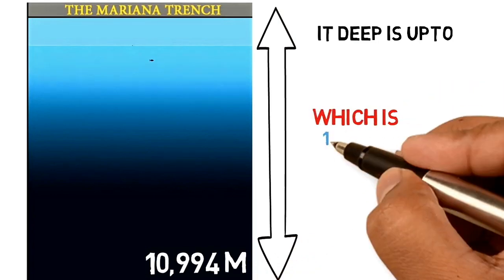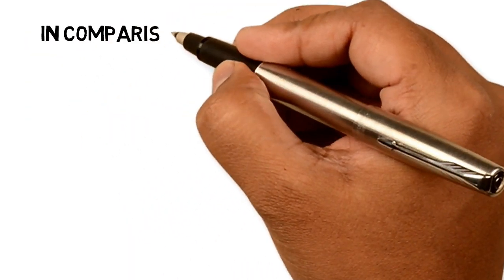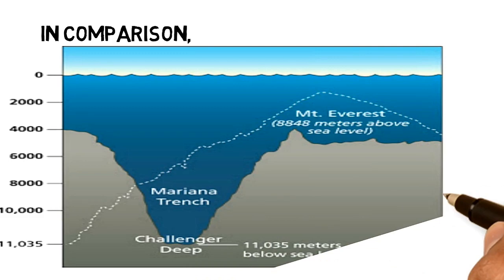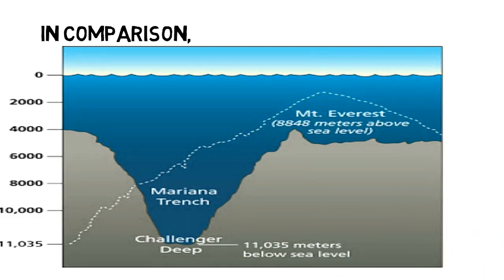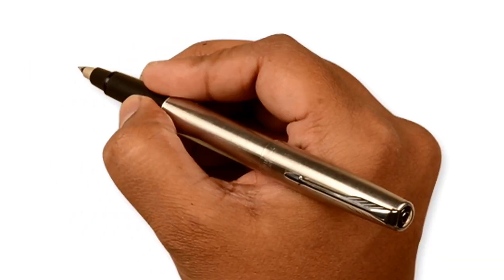This is about 1.6 kilometers more than the height of Mount Everest. For comparison, if Mount Everest were dropped into the trench at this point, its peak would still be over 1.6 kilometers below the water surface.